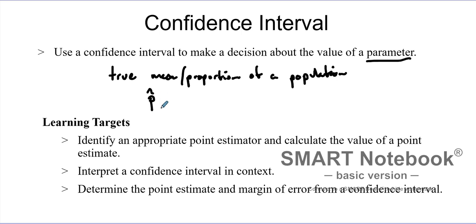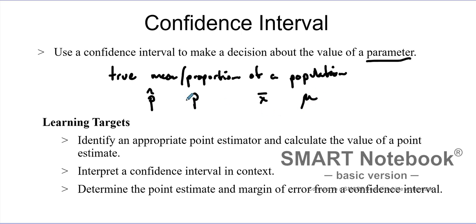How confident are we that this statistic is close to the true population? The same idea applies when we get a statistic for the mean — we want to know how close it is to the true population mean. We're trying to figure out how close our sample statistic is to that true population value.